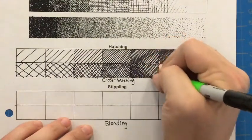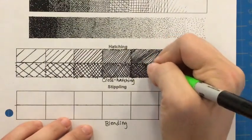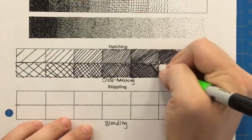So again this is called cross hatching when you have lines that are criss-crossing to create your values.